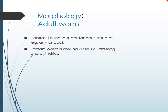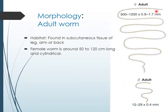Looking at the morphology of the adult worm, the habitat of this worm is in the subcutaneous tissue of the leg, arm, and back. The female worm, which is commonly seen, is around 50 to 120 cm long and cylindrical — very thin, barely 1 cm in thickness but up to 120 cm in length. The male is much smaller than the female and disappears after fertilization.